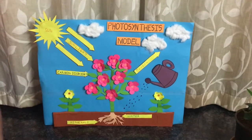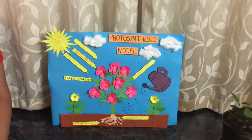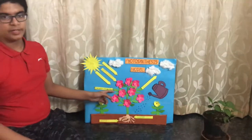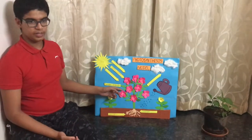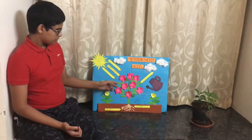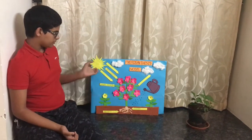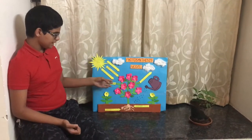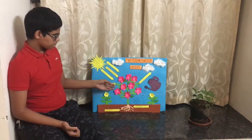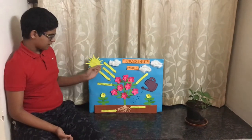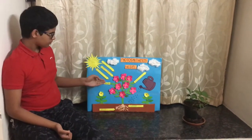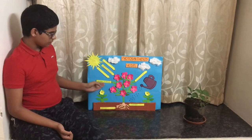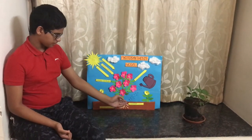So what is photosynthesis? The leaves have a green pigment called chlorophyll. This pigment helps to capture sunlight. This energy — that is sunlight — is used to synthesize food from carbon dioxide and water.